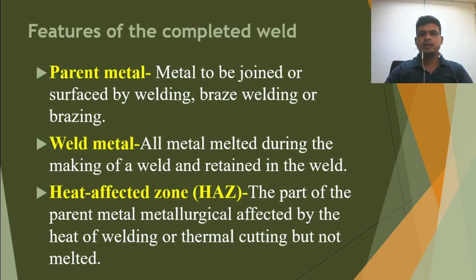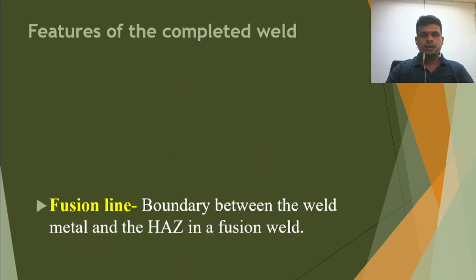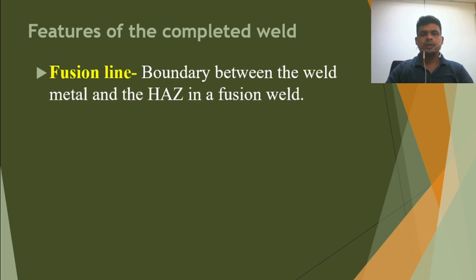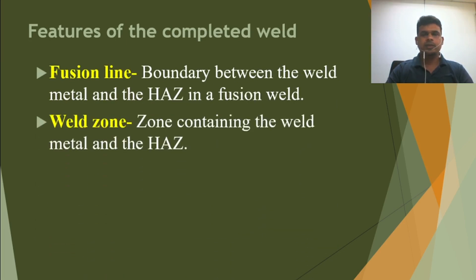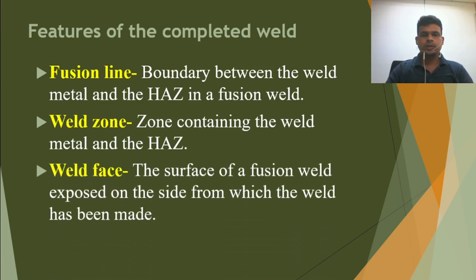The fusion line is the boundary between the weld metal and the HAZ in a fusion weld — I already showed you in the picture. The weld zone is the zone containing the weld metal and HAZ. The weld face is the surface of a fusion weld exposed on the side from which the weld has been made.